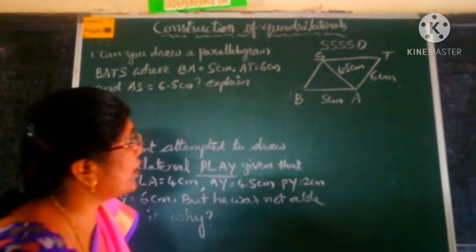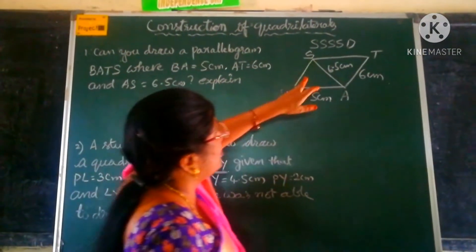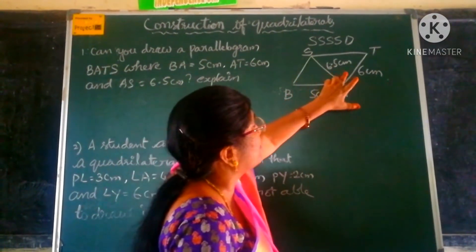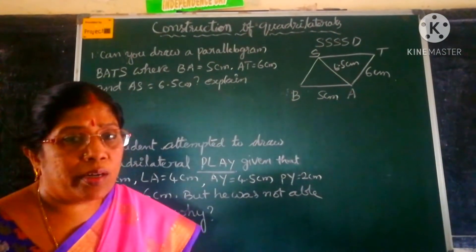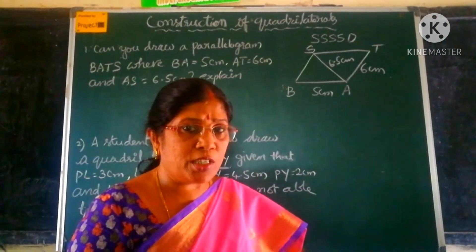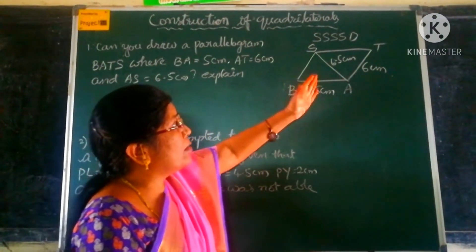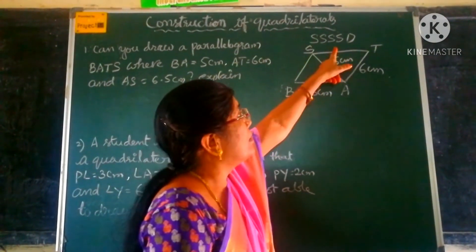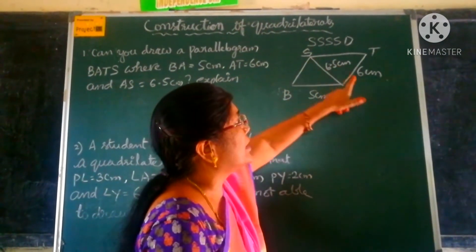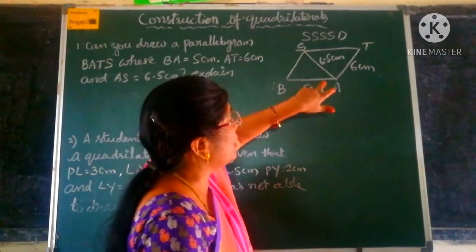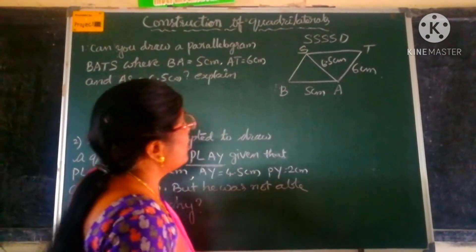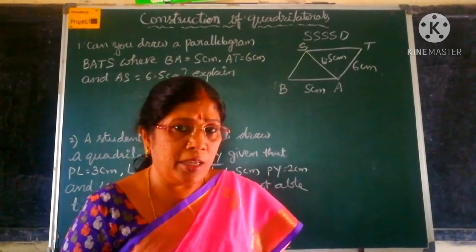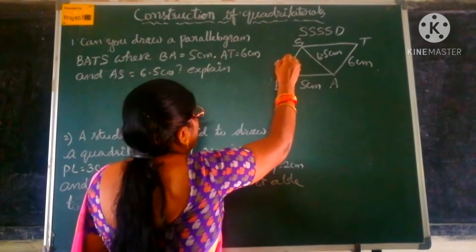As this is a quadrilateral, this diagonal divides it into 2 triangles. A quadrilateral is always a combination of 2 triangles. In this diagonal, the triangles will be equal because the opposite sides are equal to each other. Therefore, these form equal triangles. Okay children? We all know that to construct a triangle, we need 3 measurements, and we already have 3 measurements here.